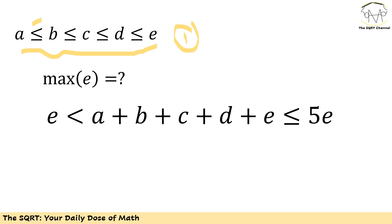Based on these assumptions, when we say we want to find the maximum possible value among a, b, c, d, and e, it's simply going to be the maximum value for e, since in our assumption e is the largest number. Now let's use this to simplify the problem a little bit.